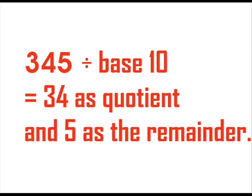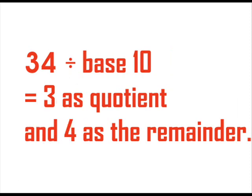Divide again 345 by 10 and we get 34 as the quotient and 5 as the remainder. Divide 34 by 10 and we get 3 as the quotient and 4 as the remainder.